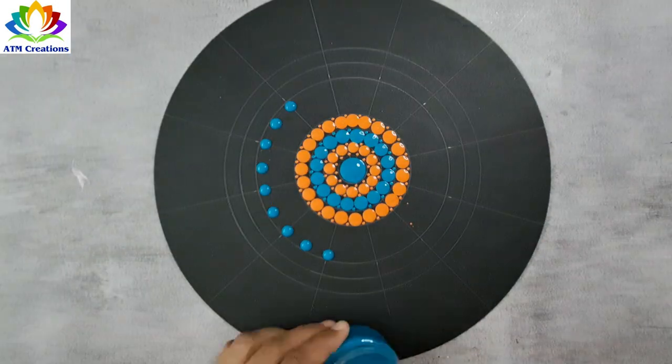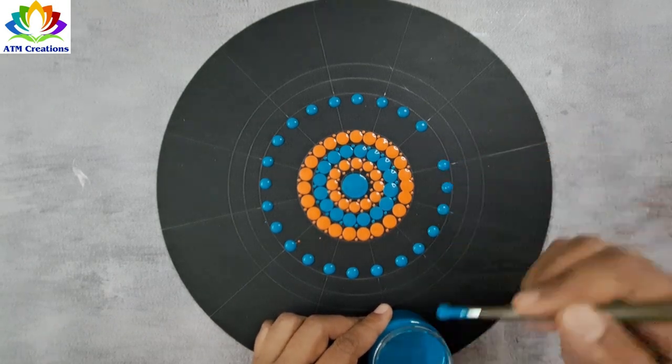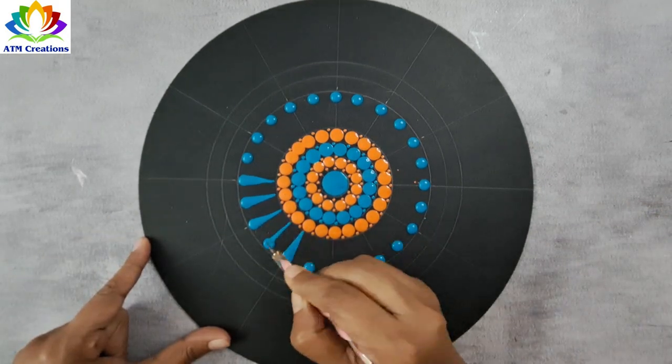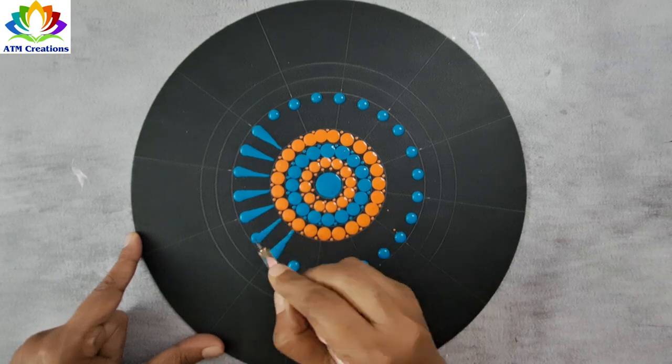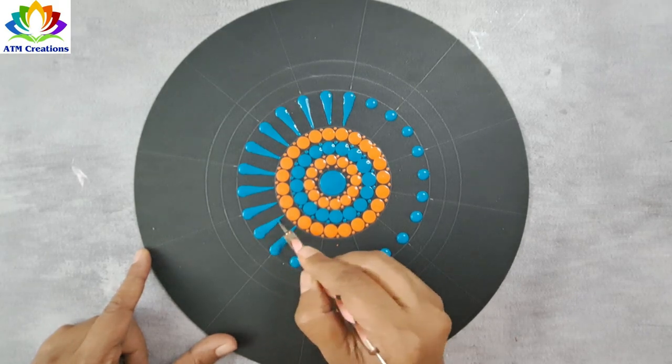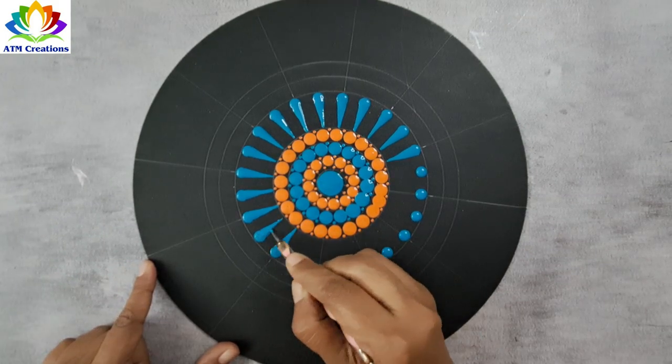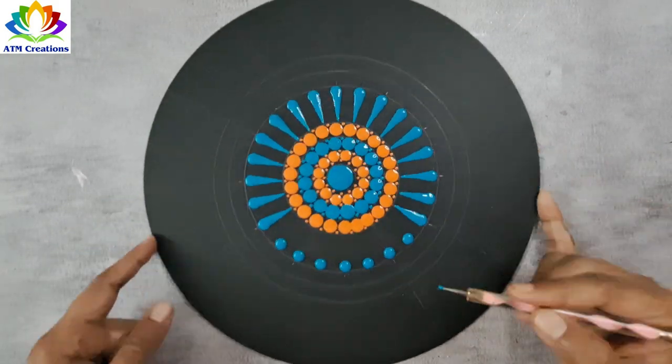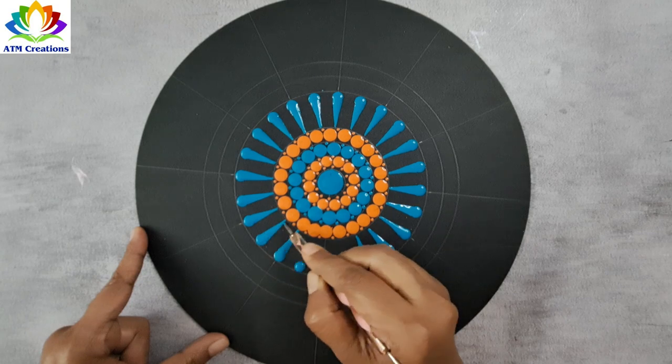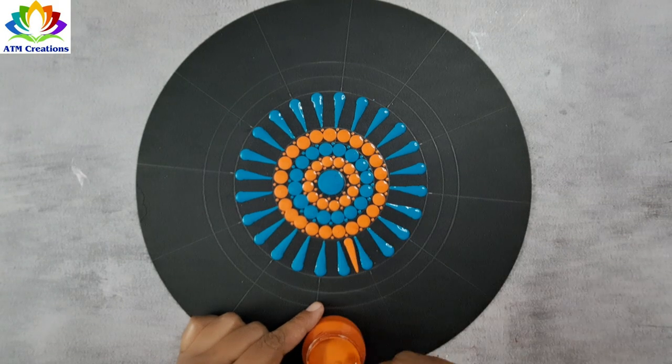I'll make these dots into swipes now. I'll keep some straight swipes in Indian red.